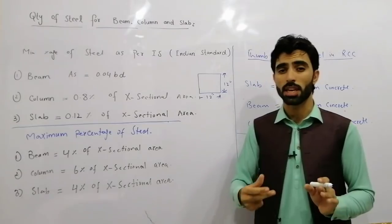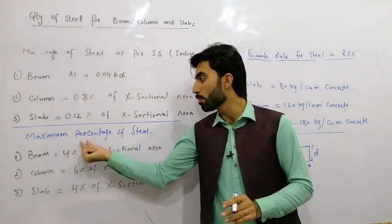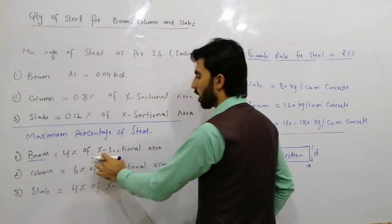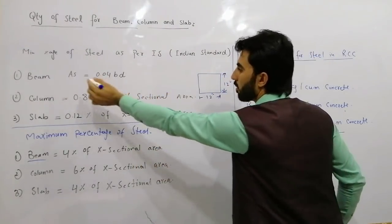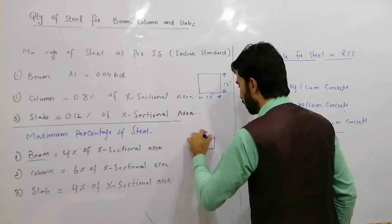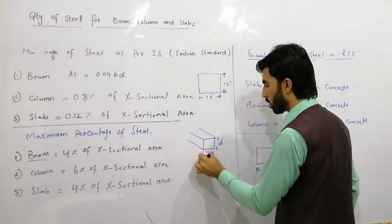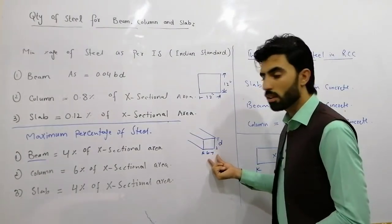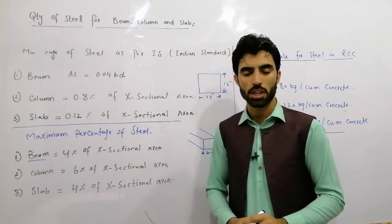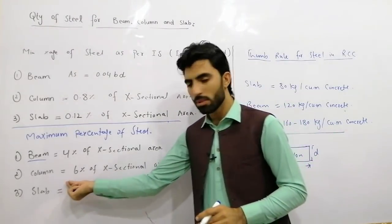Now for the maximum percentage of steel: many students ask what is the maximum percentage for different RCC structures. For a beam, take 4% of the cross-sectional area. Find the cross-sectional area using B (breadth) and D (depth), then multiply by 4%. This gives the maximum quantity of steel for a beam — it should not exceed 4%.